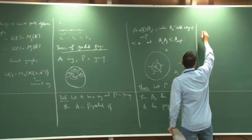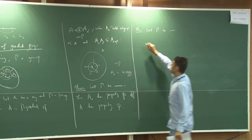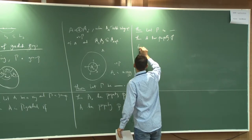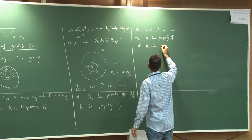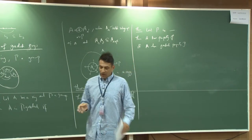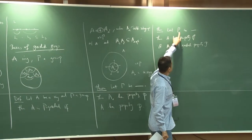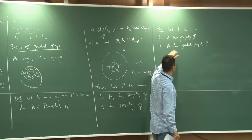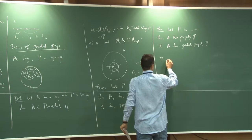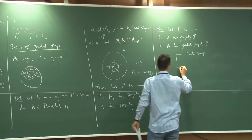The other recipe: if Γ has some property, then A has property P if and only if A has the graded version of that property. For example, you have Noetherian rings and graded Noetherian rings — with a condition on the indexing group, if A is Noetherian then A is graded Noetherian and back. The good groups in the literature are either finite groups or torsion-free groups.